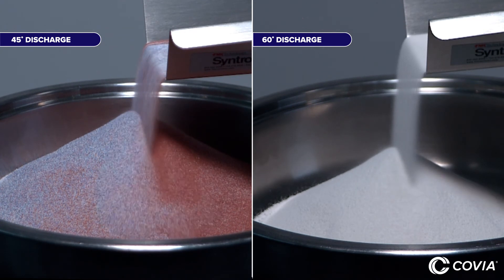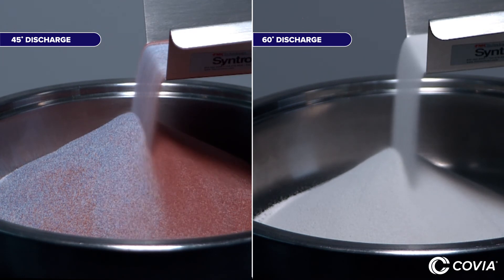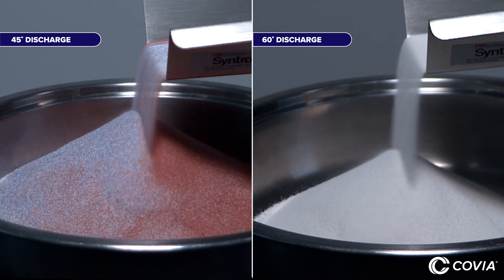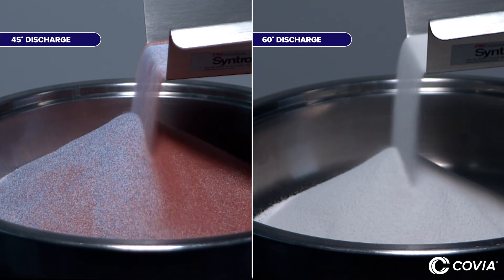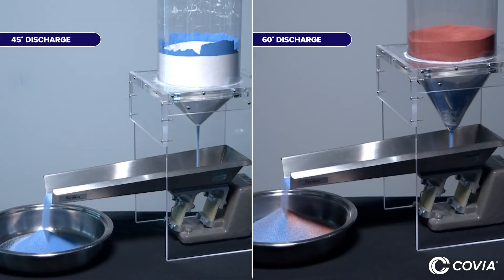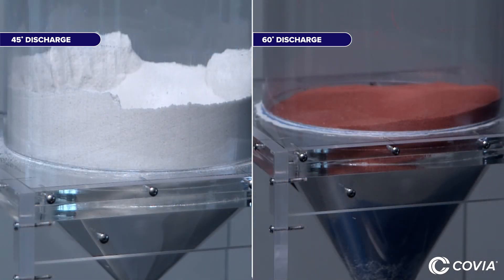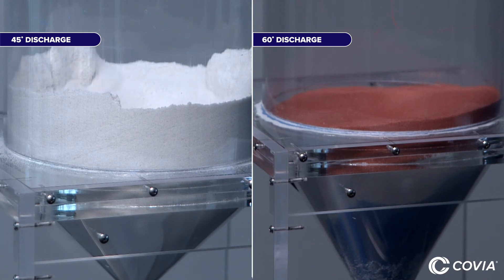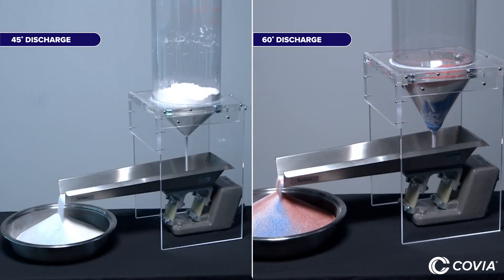Each silo has some minor blending at the layer interfaces, but each layer remains mostly unblended. The takeaway is that silo discharge angle impacts the sequence in which sand drains from the silo. The 45-degree discharge sequence is last sand in, first sand out, whereas the 60-degree discharge is first sand in, first sand out.